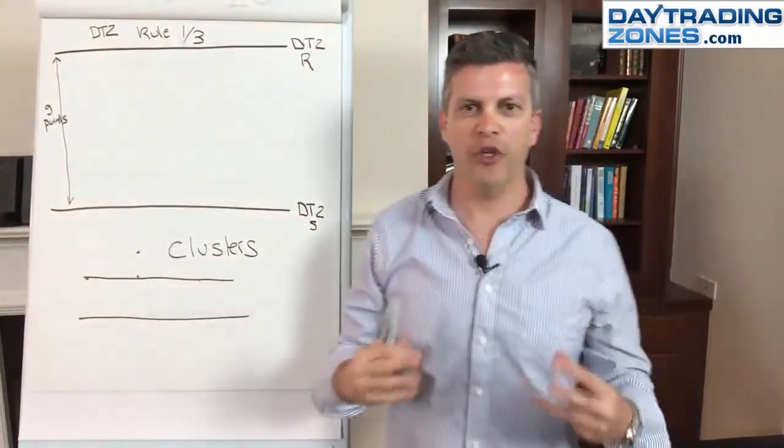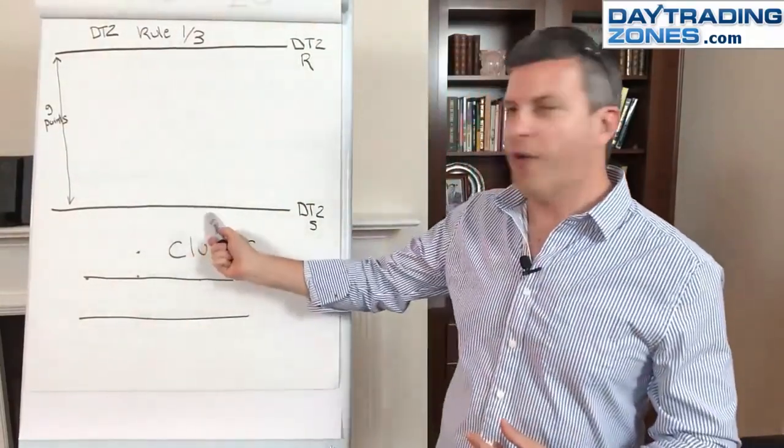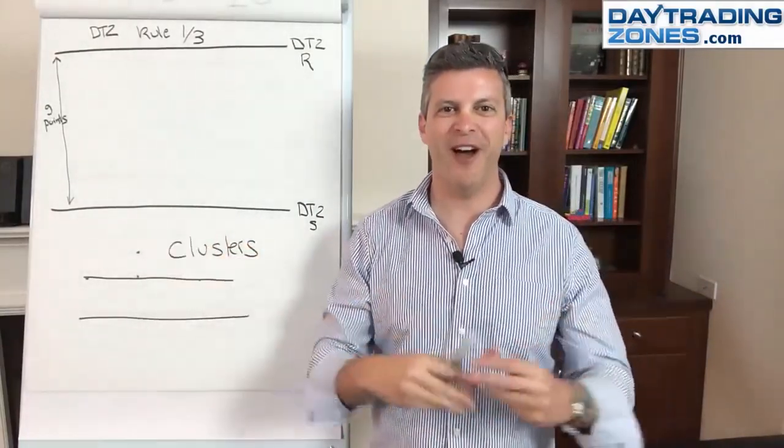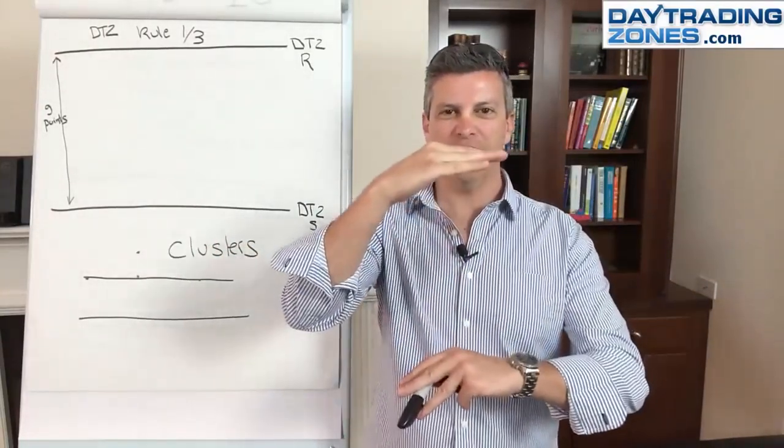Rule of third. The rule of third says find an important support and find an important resistance and divide your support and resistance range.